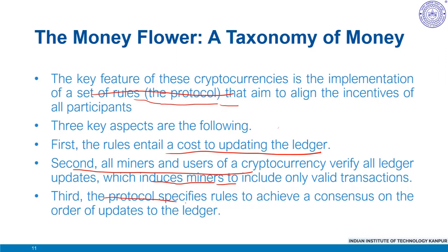Lastly, the protocol specifies rules to achieve a consensus on the order of updates to the ledger. This is generally done by creating incentives for individual miners to follow the computing majority of all other miners when they implement updates. Such coordination is needed to resolve cases where communication lags lead to different miners adding conflicting updates — that is, updates that include different sets of transactions. To summarize: we discussed the protocol, the digital aspect, and the peer-to-peer transaction as three key features of cryptocurrency.